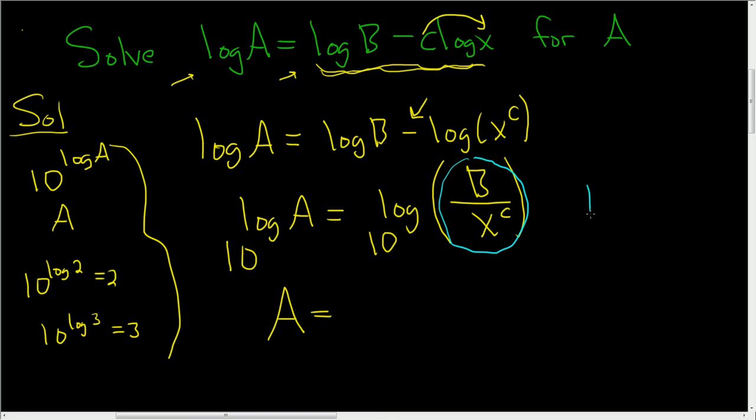This is our x. The formula is 10 to the log x is x. So we just get a equals b over x to the c. And that's the final answer.